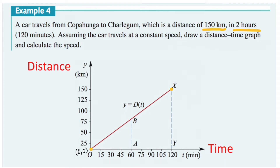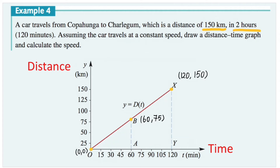The first point is our starting point, zero zero — the origin. The end point is when time equals 120 minutes and the corresponding distance is 150 kilometers. You can also find another point — point B, which is exactly halfway of the journey. When the time is one hour, or 60 minutes, the corresponding distance traveled is 75 kilometers. So the coordinates for point B will be 60 minutes and 75 kilometers — it's the halfway point.